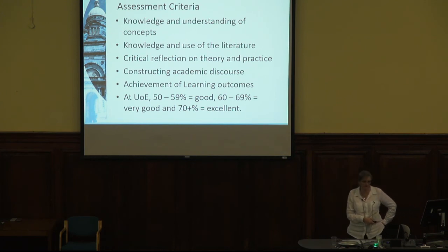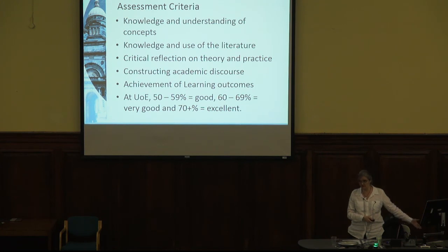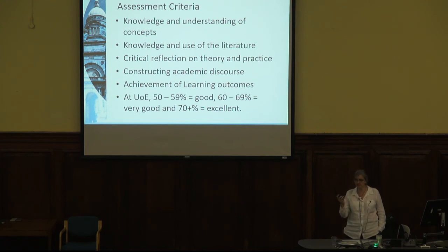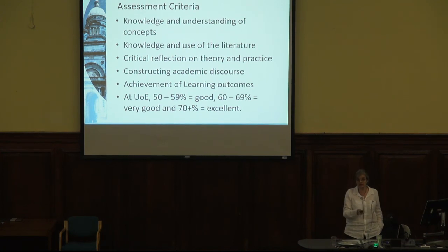As a university member, 50–59% is good. People get upset when they get a 55, but it really is good. When I was a PhD student here, I was getting 58s and 59s all the time and was admitted to do a PhD. Hardly anybody gets over 70%. I think I got over 70% once in three postgraduate degrees. So don't expect to get over 70 — I'm not stupid, but I'm not brilliant either. Most people get somewhere around the C mark. If you get into the Bs, you're doing really, really well.